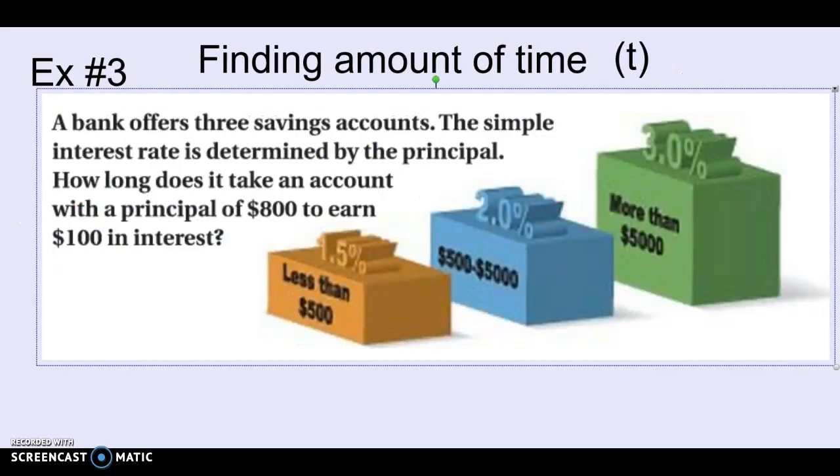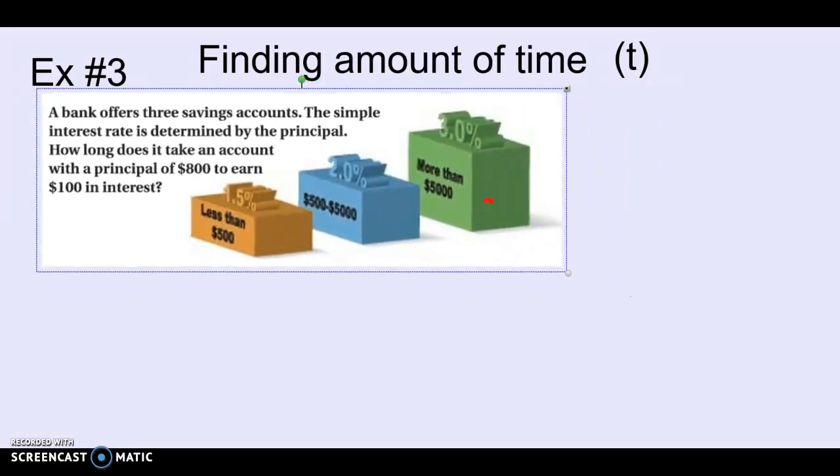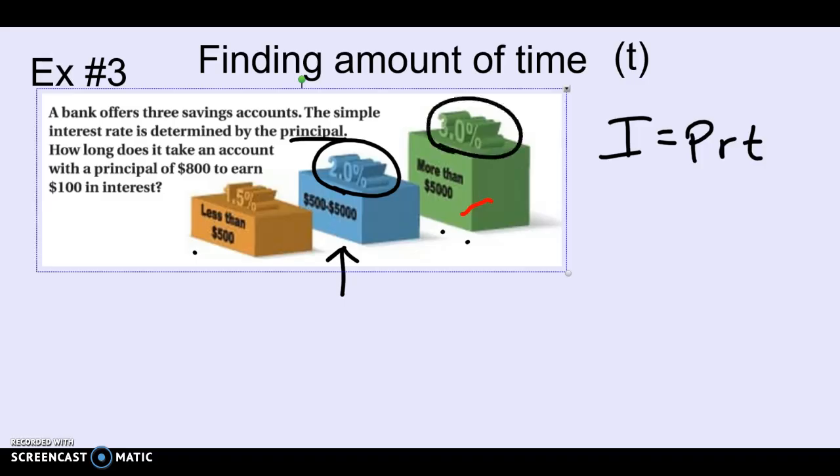What about if they ask me to find time? Well, they should be giving me the information I need except for T. And we'll be solving for time. So I'll copy my formula down. Let's read the question here. A bank offers three different savings accounts. Option one, option two, and option three. The simple interest rate is determined by how much money you put in. If you put more principal in, you get a better rate. How long does it take an account with a principal of $800 to earn $100 in interest? Well, $800 would fit into this category. I don't know if you can read that. This says $500 up to $5,000. So we're looking at an interest rate of 2%. If I put in more than $5,000, I'd get a better interest rate. But we're still here in this category.